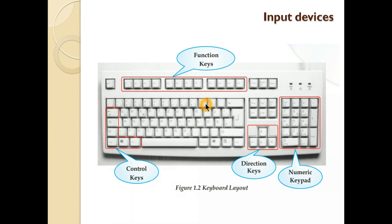Number keys on a keyboard appear at two locations: first at the upper row above the alphabet keys (digits 0 to 9), and second at the numeric keypad on the right side. Arrow keys are also called direction keys. Control keys include Tab, Caps Lock, Shift, and Alt — they are used for controlling the input. There are also other keys like Page Up and Print Screen. F1 to F12 are the 12 function keys, each having a specific function per different applications.